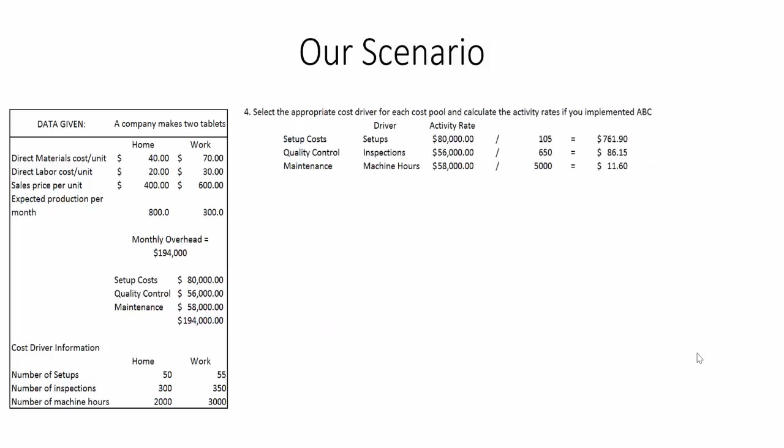Moving to the ABC costing scenario, we calculate rates for the different activity cost pools. For setup costs, we have $80,000 and a total of 105 setups (50 plus 55), so $80,000 divided by 105 gives a rate of $761.90. For quality control, we take $56,000 divided by 650 inspections (300 plus 350), giving a rate of $86.15. The same calculation pattern applies for the remaining cost pools.